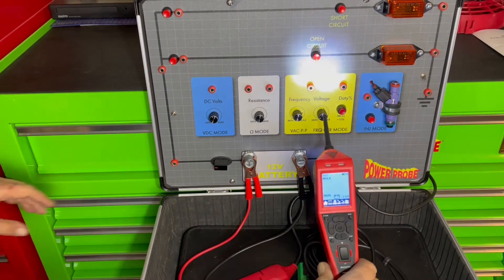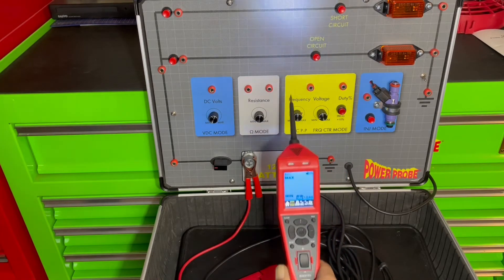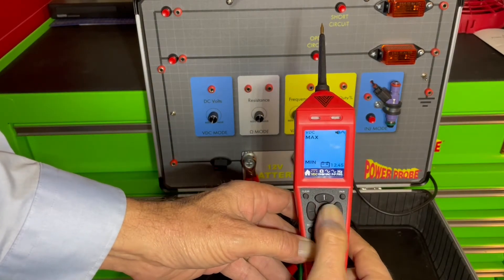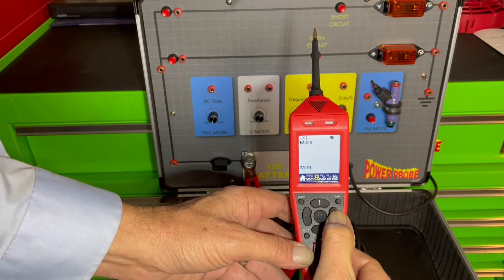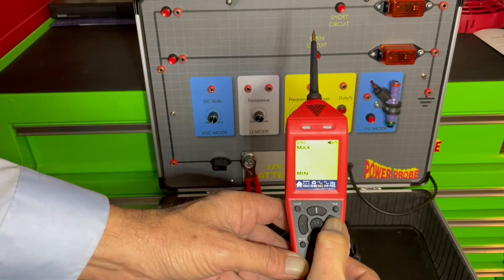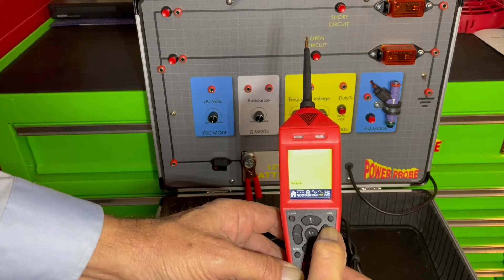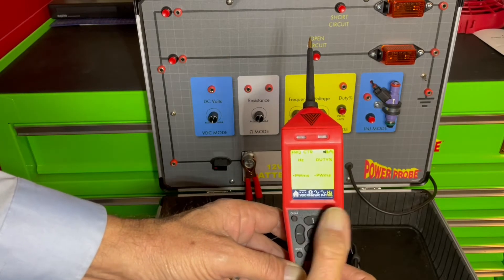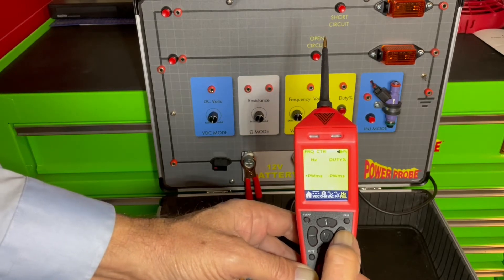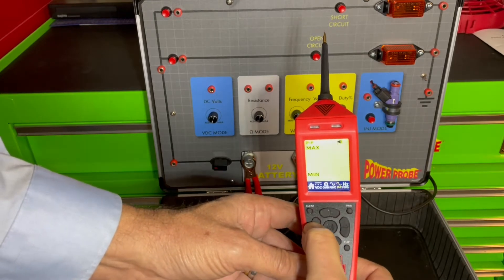You see on the Maestro we've got a color screen. Now there are mode selections at the bottom and you can use these buttons to move your way around. There's VDC mode, there's your ohm meter mode, there's your voltage AC, there's your peak to peak AC voltage, there's your frequency and pulse width, and we've added duty cycle. Duty percentage was not in the Power Probe 4. You can come back to your home screen and you'll see those were your multimeter modes.